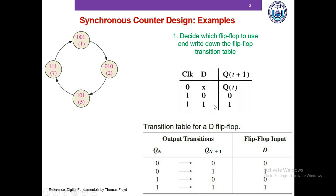This is the characteristic table or truth table of a D flip-flop. From this, we're going to develop the transition table. In the transition table, Qn indicates the present state output of a D flip-flop, and Qn+1 indicates the next state output of the D flip-flop. Since the outputs are binary, there are four possible present state to next state transitions: 0 to 0, 0 to 1, 1 to 0, and 1 to 1.